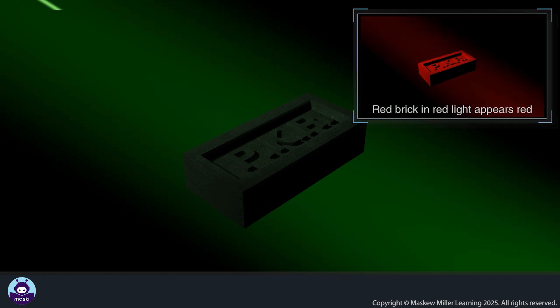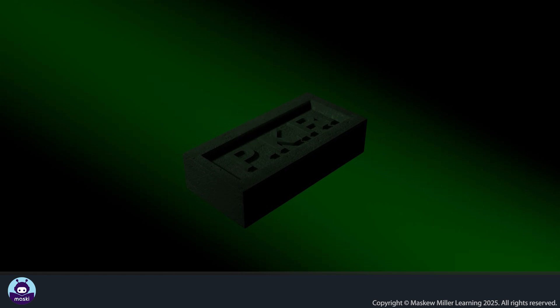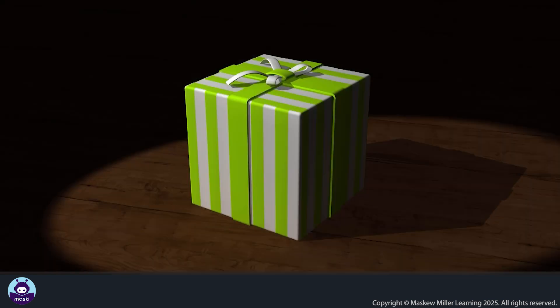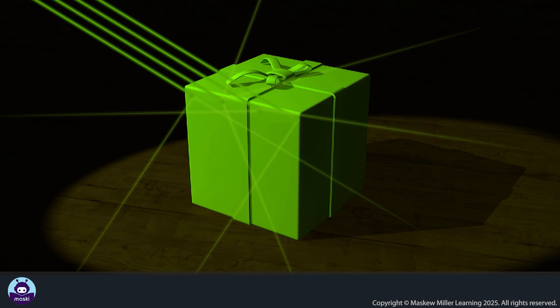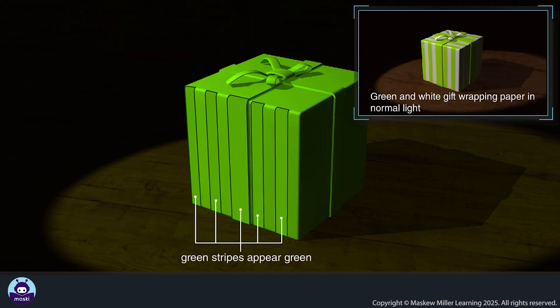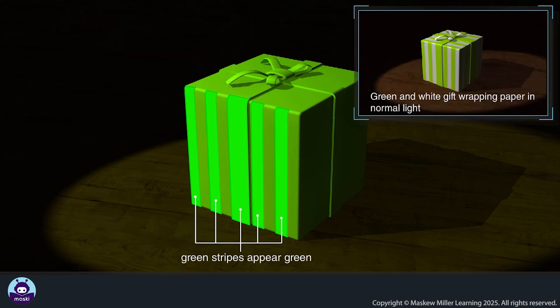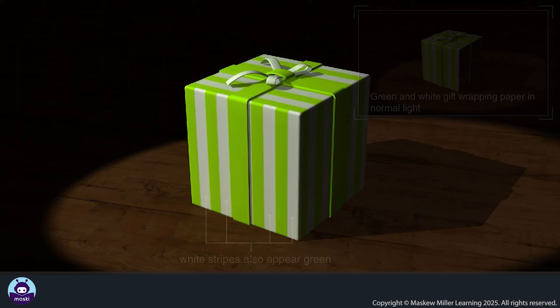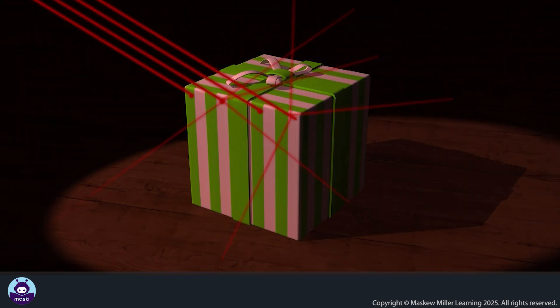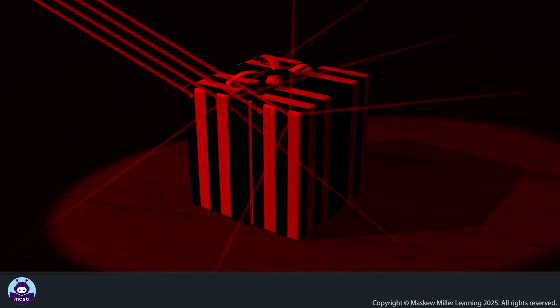In green light, the gift wrapping paper appears to be only green. The green stripes still reflect the green light, and because there is only green light available, the white stripes also appear green. In red light, the gift wrapping paper suddenly has black and red stripes.